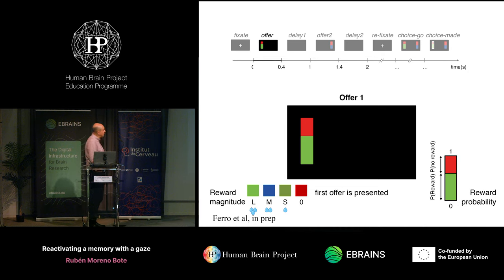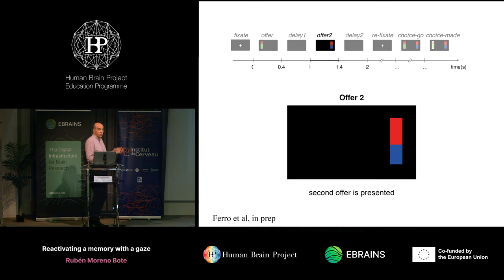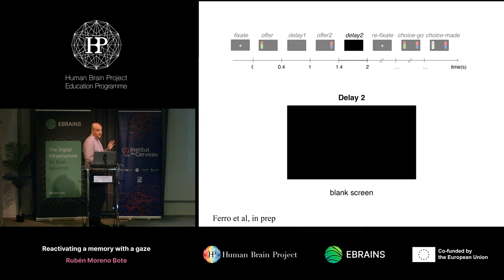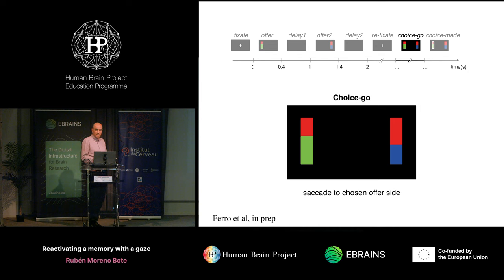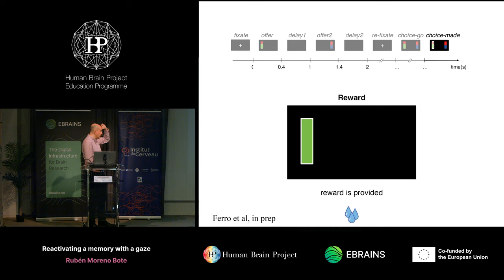Importantly, after the first offer presentation there is a delay period where gaze is totally free. Then the second offer is presented on the other side with the same structure, but with reward magnitude and probability chosen randomly and independently from the first offer. Then there is a second delay period, followed by a refixation condition where both offers reappear and the animal chooses one by looking at it. If the probability result is positive, it receives the reward.